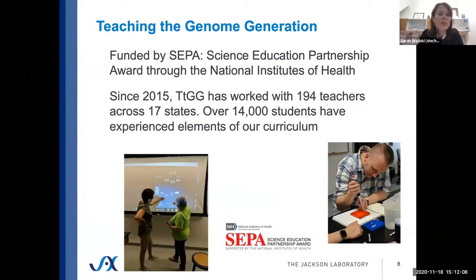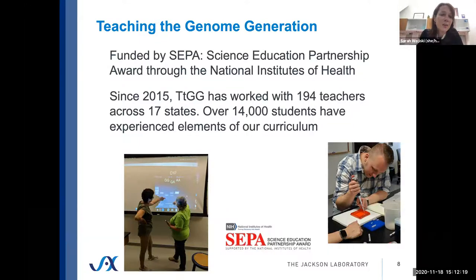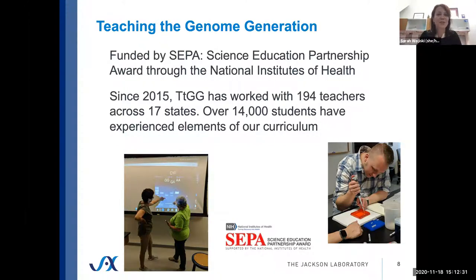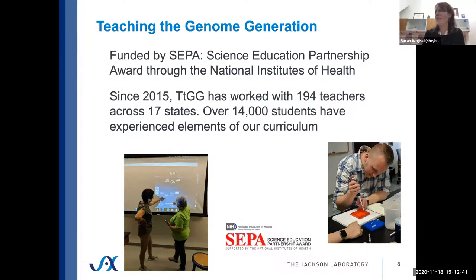The Teaching the Genome Generation program is funded by a Science Education Partnership Award through the National Institutes of Health. Since 2015, TTGG has worked with close to 200 teachers across 17 states. Our campuses are in Connecticut and Maine, so we have primarily focused on the New England area, but we have been broadening our scope. Over 14,000 students so far have experienced elements of our curriculum, and we're looking forward to expanding upon that in the coming years.